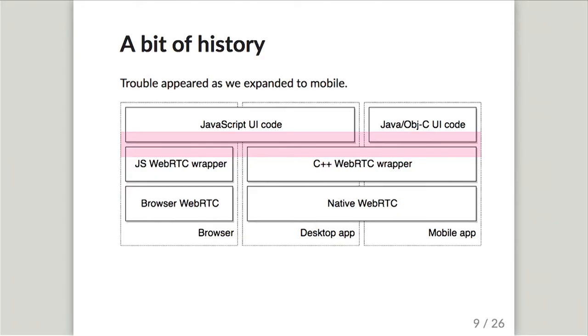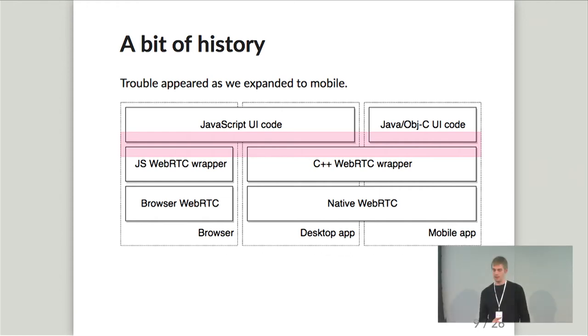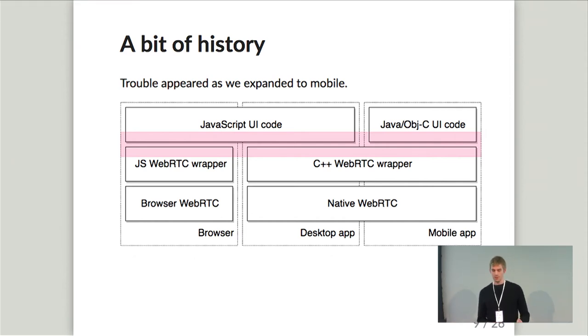The API between the WebRTC wrapper and the UI code was pretty low-level — a few weakly-typed methods passing JSON messages directly from our media server. Things were kind of spread out. But trouble appeared as we expanded to mobile, because it was no longer our team developing the UI code. We had application logic spread out into the UI layer, and the mobile platform teams ended up having to reimplement a lot of that and do a lot of parsing of raw JSON messages from the media server that they might not care about. We launched on mobile in this state, but it definitely slowed progress, and adding features later would continue to be costly.